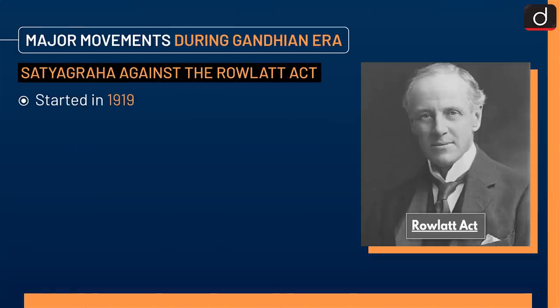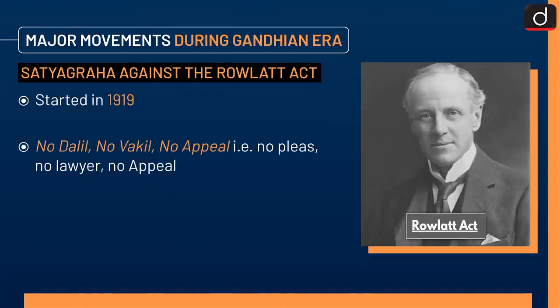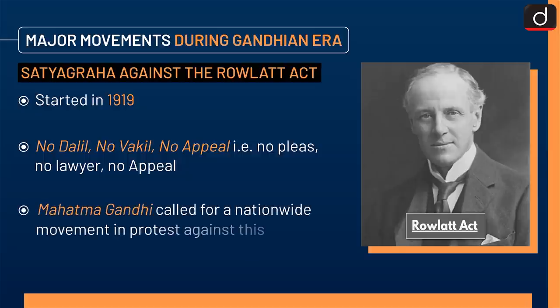Next is the Satyagraha against the Rowlatt Act, which started in 1919. It was based on the principle of no dalil, no vakeel, no appeal — that is, no pleas, no lawyer, no appeal. Mahatma Gandhi called for a nationwide movement in protest against this act.